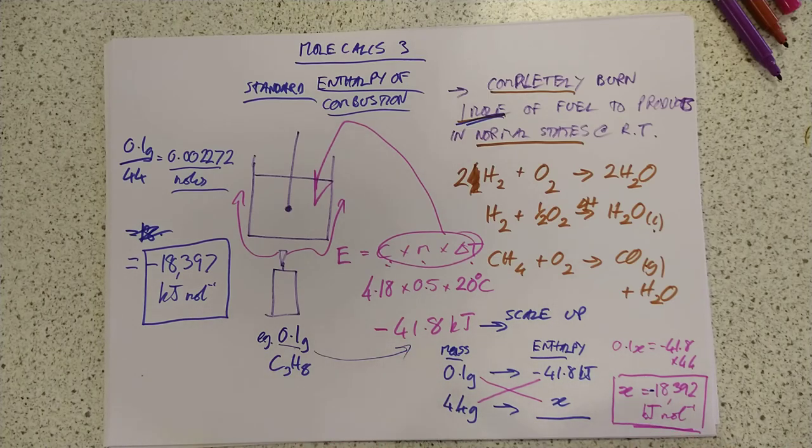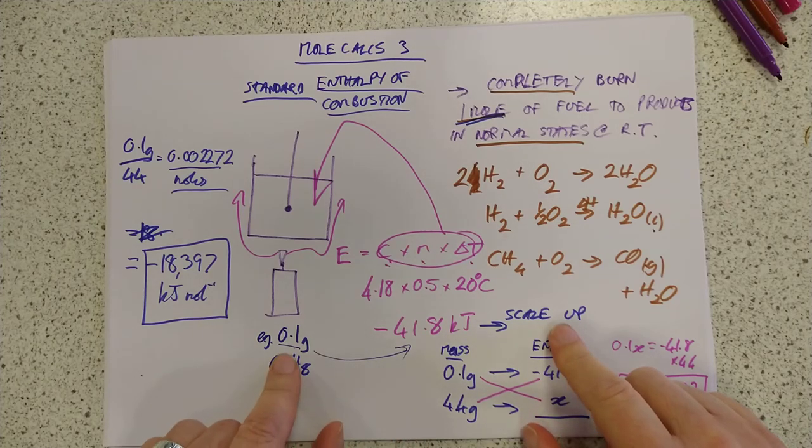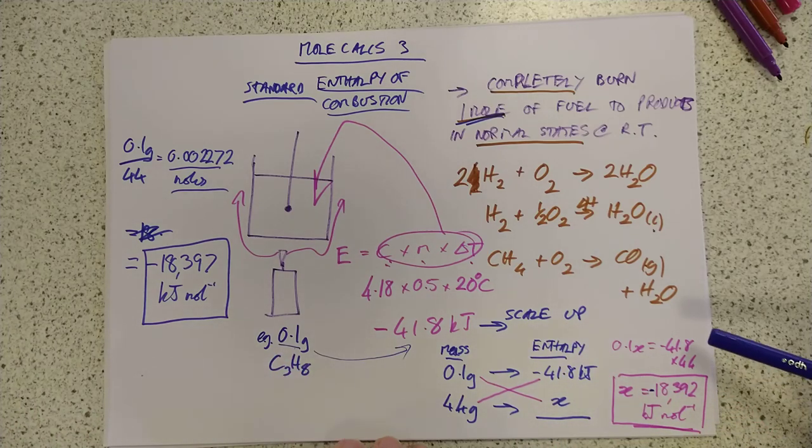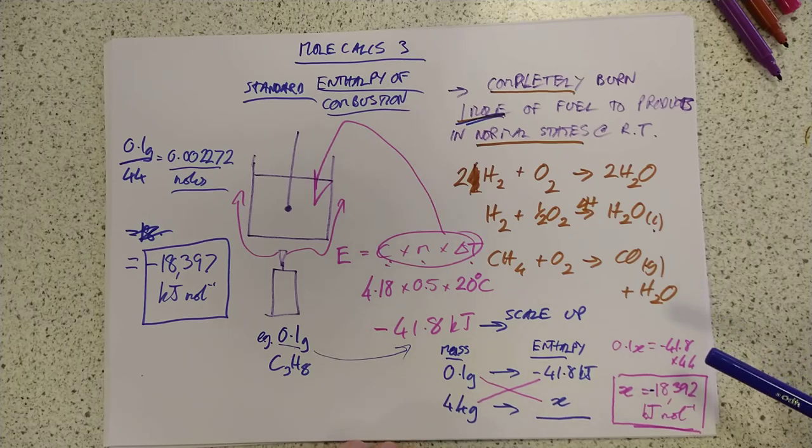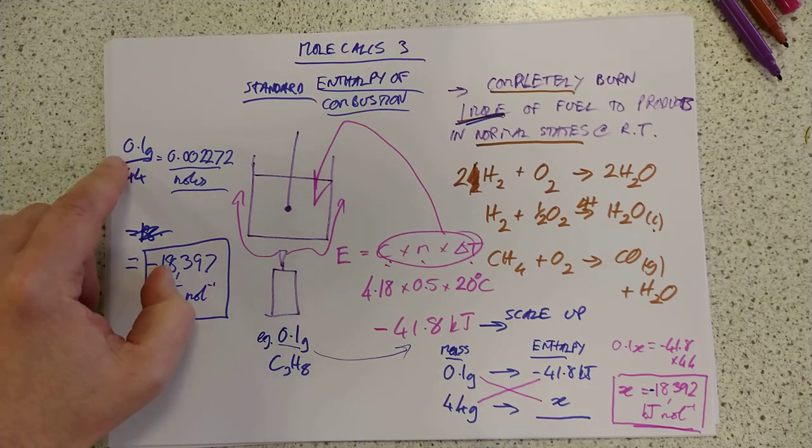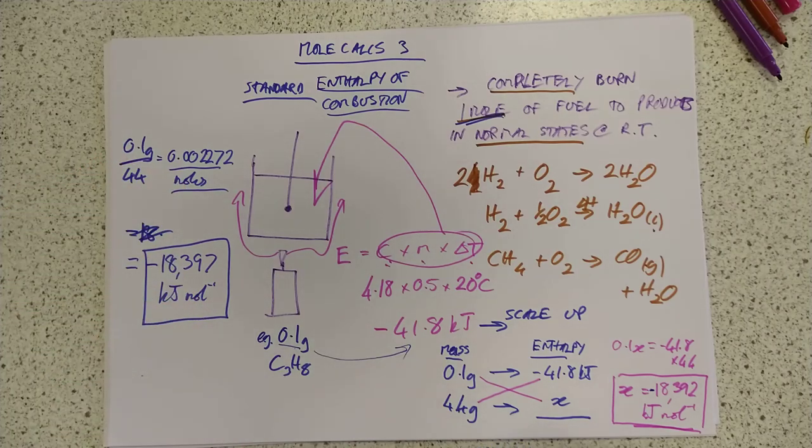However, now, once you've done that, you need to scale up to work out what the delta H would have been if you burned one mole of your fuel. I say scale up. I suppose in theory it could be scaled down if you ever managed to burn more than one mole of fuel. But you'd have to be heating up like an Olympic-sized swimming pool for that in order not to boil it. And you can do it by proportionality, where you analyse the type of data. So we're dealing with masses and enthalpies. Or you can convert the mass that you burned into moles and then scale up from there. Either one is good.